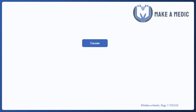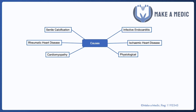A common topic that comes up especially in OSCEs is the various causes of murmurs. There is some overlap between causes and which valves may be damaged. Common causes include senile calcification, especially of the aortic valve, making it less able to open or close properly. Infective endocarditis is another common cause, where bacteria establish vegetations and cause destruction of the valve. Ischemic heart disease can also lead to valve damage. It's worth remembering that murmurs can be physiological as well, since murmurs are caused by turbulent flow — high flow through the heart can produce a physiological murmur. Other causes include cardiomyopathy and, less commonly nowadays, rheumatic heart disease.